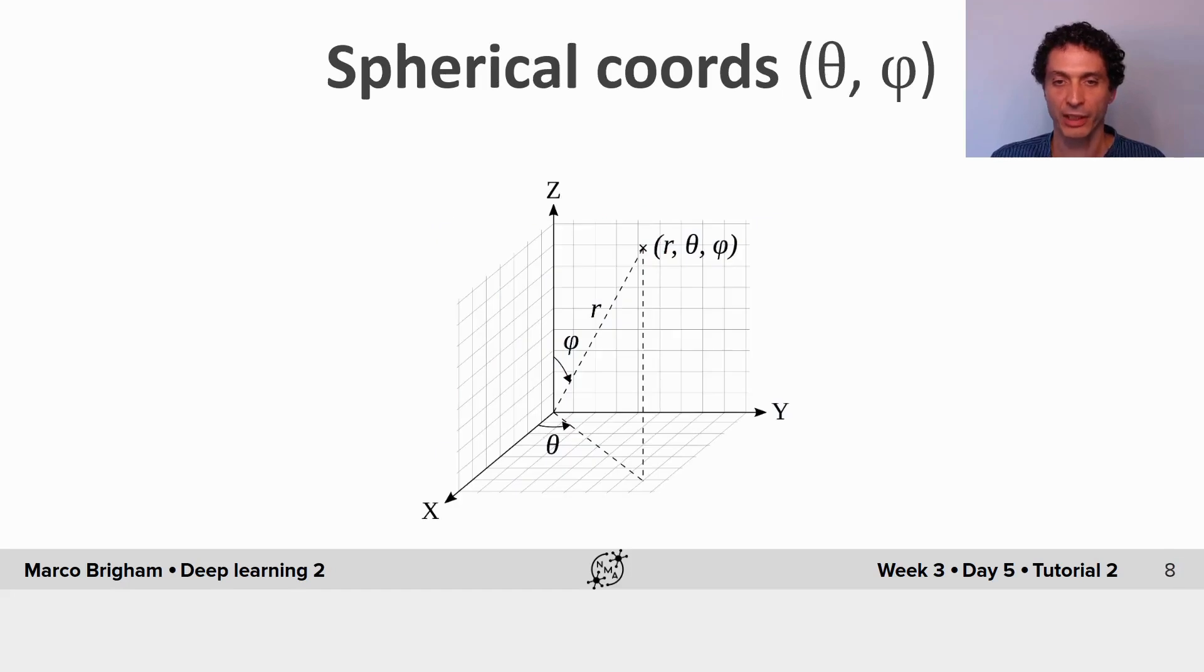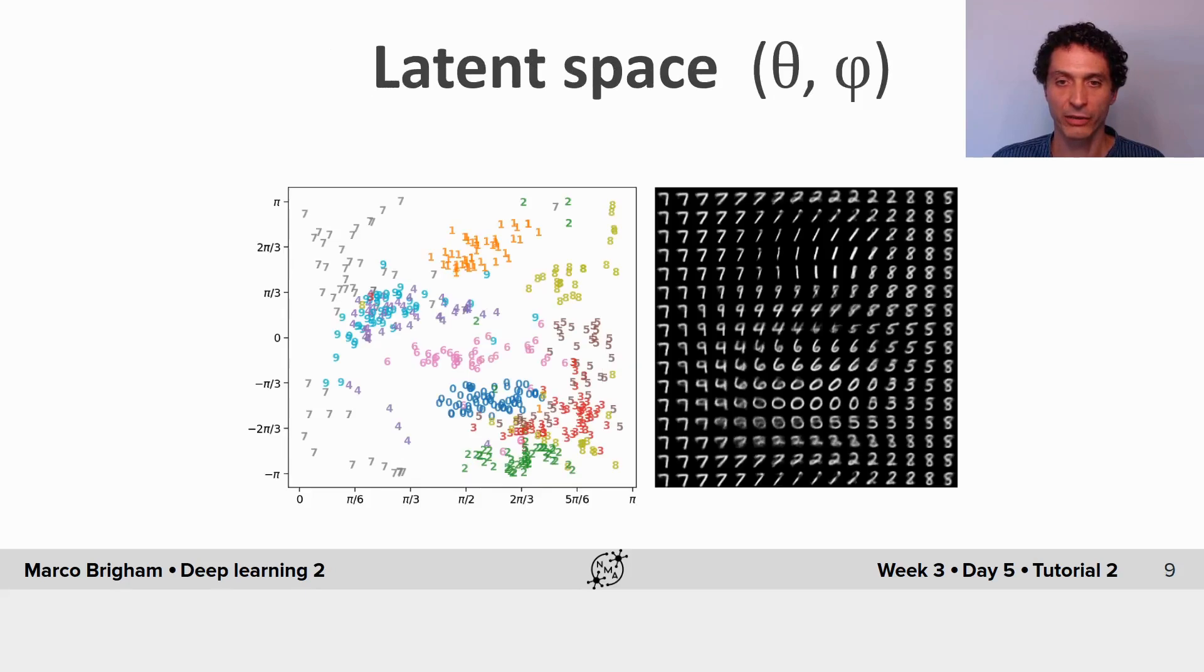But actually, on the surface of the sphere, there are only 2 degrees of freedom, which are the theta and phi angles. And so we can project back into a 2D latent space, where theta and phi are the degrees of freedom.